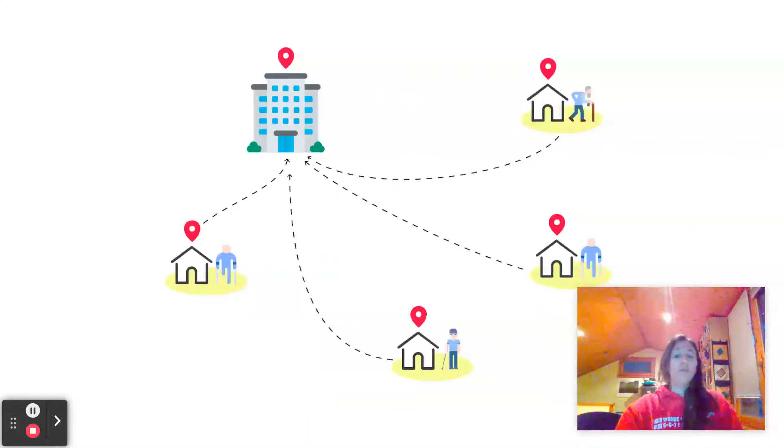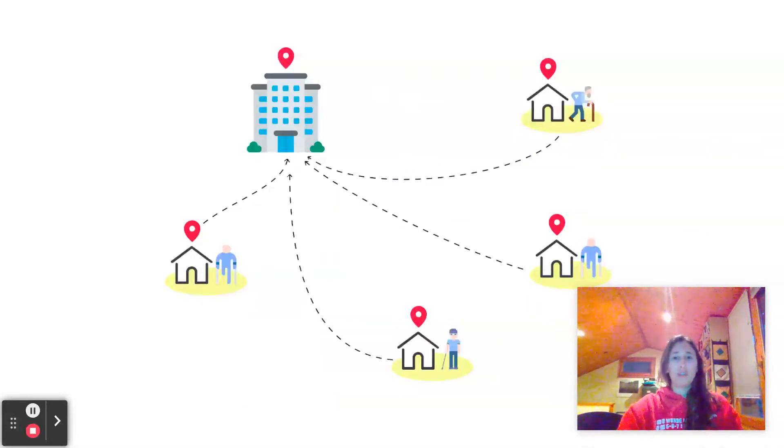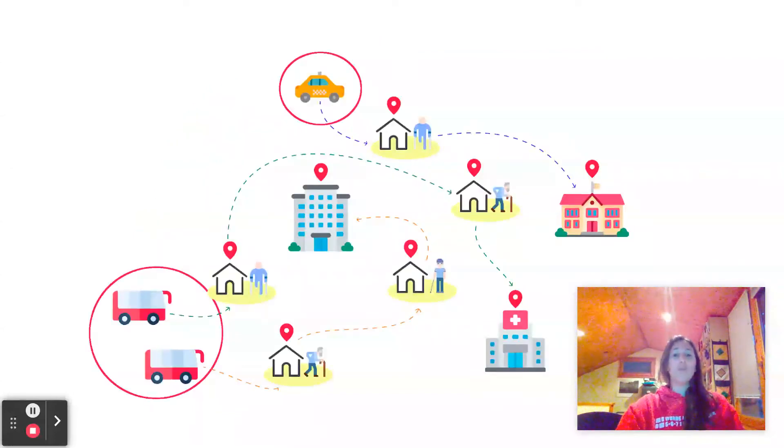There are multiple pickup locations, there are multiple delivery locations, like the schools, health centers, and work, but there are also multiple vehicles that can achieve these goals. There are buses, or there are taxis.